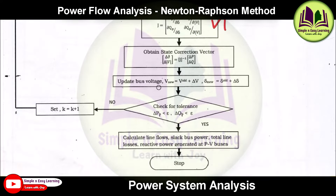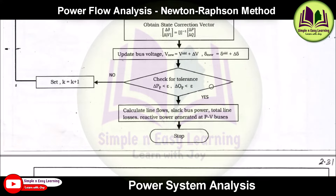Update the bus voltages: new voltage = old voltage + change in voltage. Similarly, for the angle: delta_new = delta_old + delta_delta. Then check the tolerance — whether the change in real power and change in reactive power lie within tolerable limits.